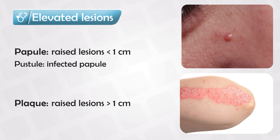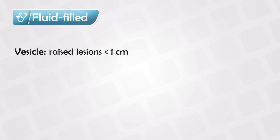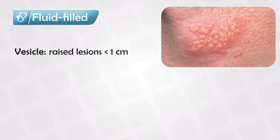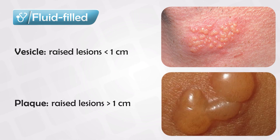Sometimes a raised lesion can have some fluid inside, and this will change the terminology. All lesions that contain fluid will rise above the skin. If the fluid-containing lesion is less than one centimeter, it will be known as a vesicle. Keep in mind, vesicles tend to group together in large numbers but are smaller in size.